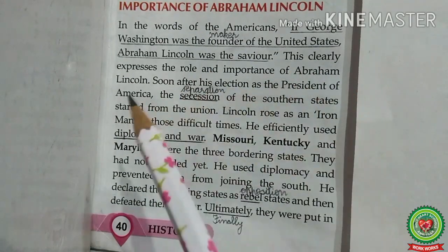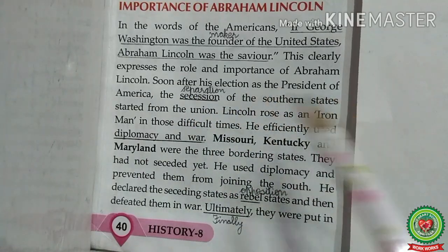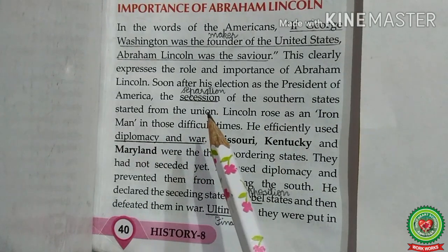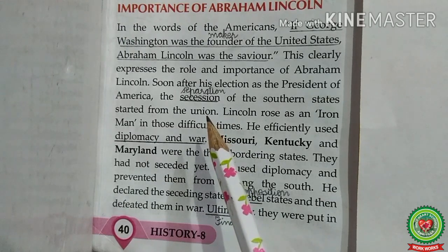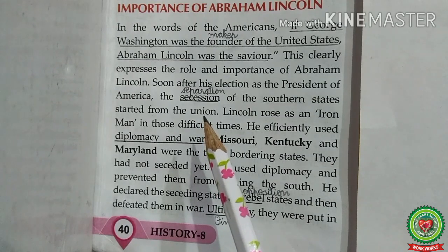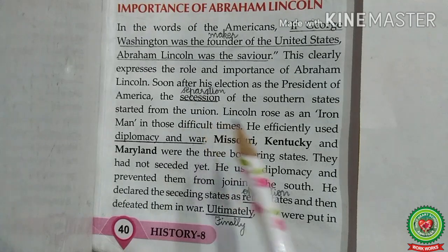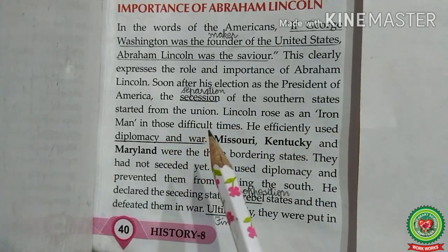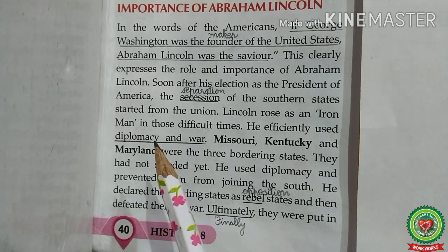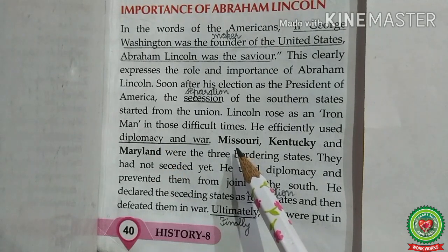Soon after his election as president, the secession of the southern states started from the Union. Secession means separation — after the presidential election of 1860, Lincoln became president and started leading the northern Union states, while the southern states began seceding. Lincoln rose as an Iron Man in those difficult times. He efficiently used diplomacy — the art of dealing with people in a sensitive and tactful way — alongside war.